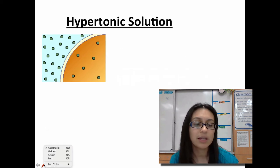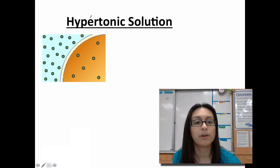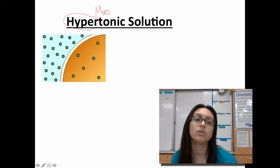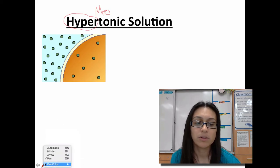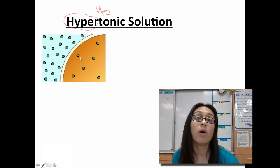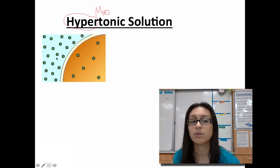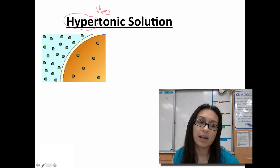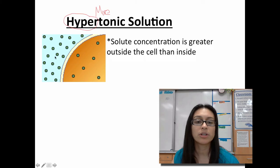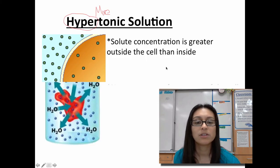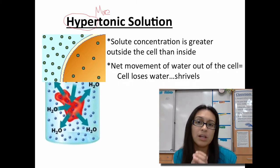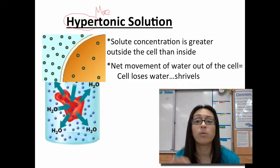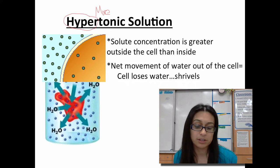Hypertonic solution — the key is the prefix "hyper," which means more. A hypertonic solution means there's more solute outside of the cell than inside. With more solute outside than inside, the water is going to want to move from an area where there's less solute to an area where there's more — so the water is going to want to move out of the cell. Solute concentration is greater outside than inside, resulting in a net movement of water out of the cell. That causes the cell to lose water and shrivel, and it could get to a point where the cell actually dies.